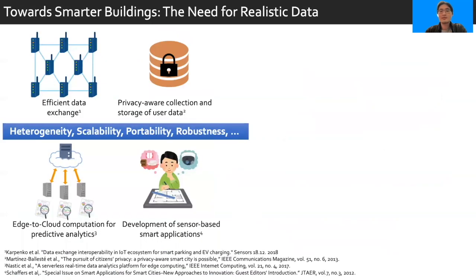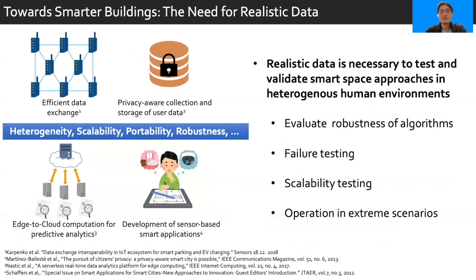To realize these benefits, a number of system-level to application-level research challenges need to be addressed, some of which include heterogeneity, scalability, portability, and robustness. There's a lot of interest in these problems, from enabling efficient data exchange to developing sensor-based smart applications. However, realistic data is necessary to test and validate these approaches in order to explore various properties such as the robustness of algorithms, failure testing, scalability testing, and operation in extreme scenarios, among others.